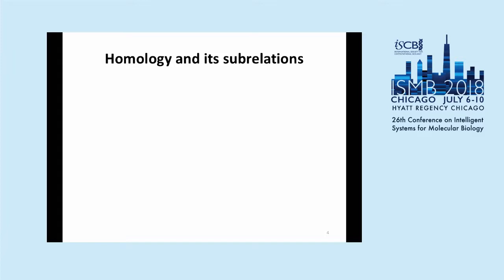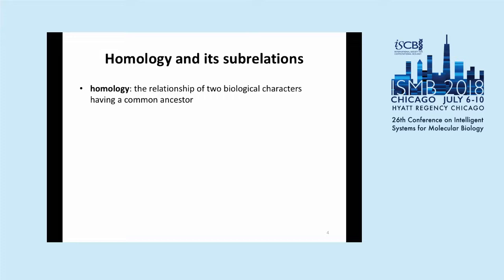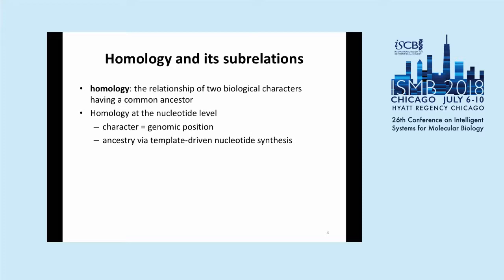A review of the notion of homology and its subrelations: homology is a very old term referring to the relationship of two biological characters having a common ancestor. A biological character is some feature of an organism — it could be a morphological feature, like the number of digits on a foot, looked at across species. For us, dealing with genomic sequences, we look at homology at the nucleotide level. A character is a genomic position, and ancestry of genomic positions is derived via template-driven nucleotide synthesis — the way DNA copies itself.